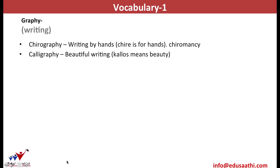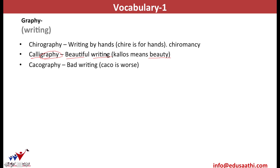Again, calligraphy — this is the practice of writing beautifully. Calligraphy is made of callous (beauty) and graphy (writing). So the beautiful handwriting is known as calligraphy. The opposite of callous is caco. Thus, cacography is bad handwriting. Caco is used in many words such as cacophony, which is noise. Because caco is bad and phony relates to sound, bad sounds or noise is known as cacophony.